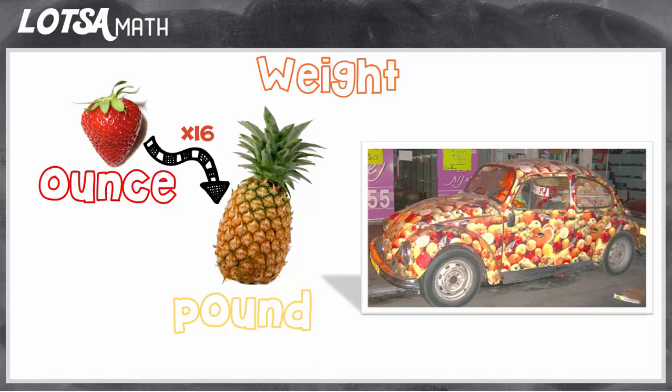But there are some things that weigh a lot more than a pound. In fact, the next unit of measurement is 2,000 times bigger than a pound, and it's called a ton. So when you want to measure really big things like cars or houses or boats, you would use the unit of a ton.